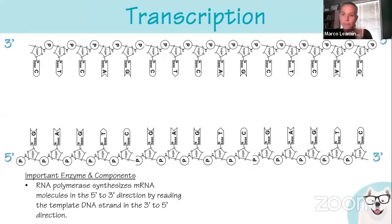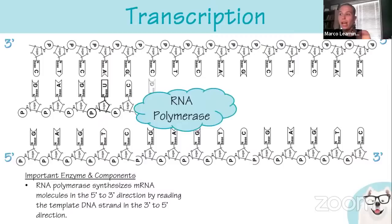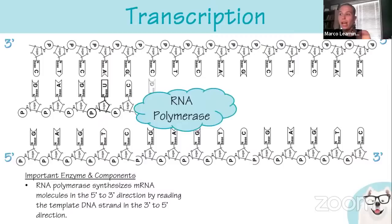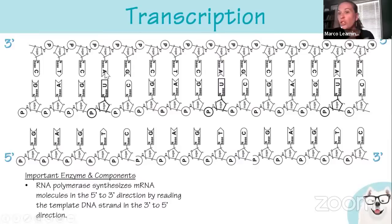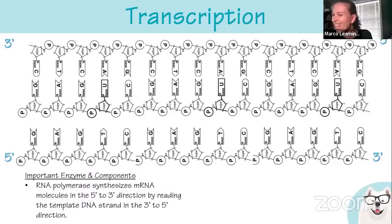RNA polymerase opens the DNA and starts base pairing — it does not need a primer like DNA polymerase does. The only difference in the resulting strand is that where you'd have thymine in DNA, you see uracil in RNA. On multiple choice questions: if they ask about RNA and you see thymines in an answer choice, that's wrong. If they ask about DNA and you see uracils, that's also wrong — eliminate those choices.